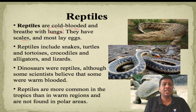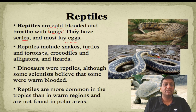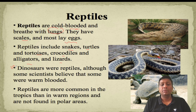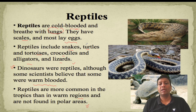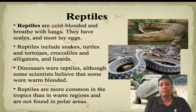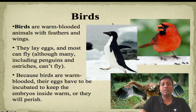Reptiles are also cold-blooded animals; they breathe through lungs and have scales and legs. Reptiles include snakes, turtles, tortoises, crocodiles, alligators, and lizards. Dinosaurs were the biggest reptiles ever on Earth — although some scientists believe some dinosaurs were warm-blooded. Reptiles are more common in tropical and warm regions and are not found in polar areas. They are very common in dry areas such as Rajasthan and desert regions.